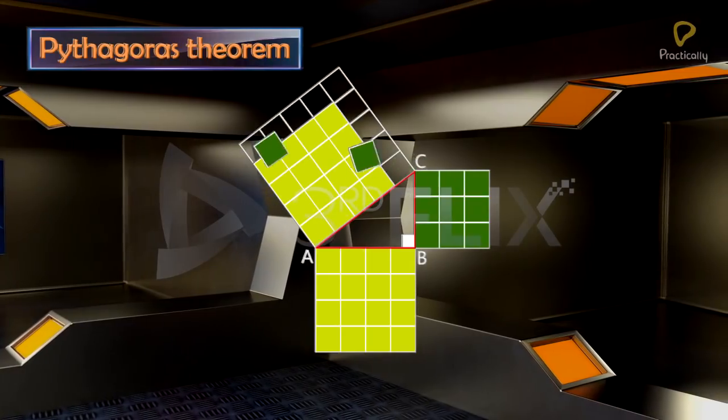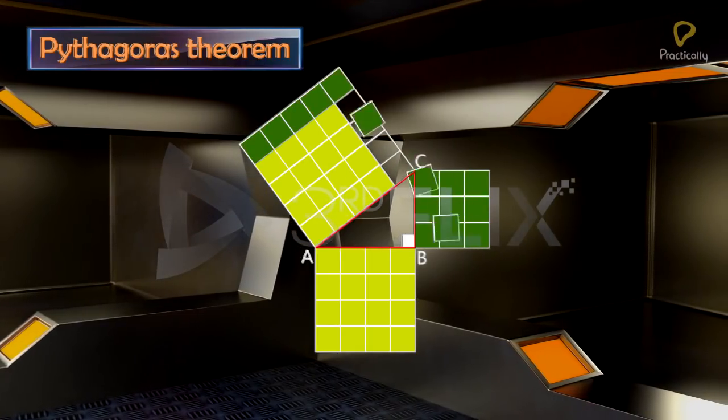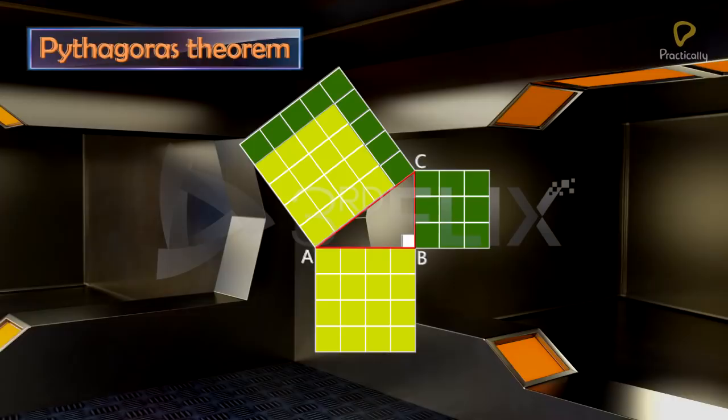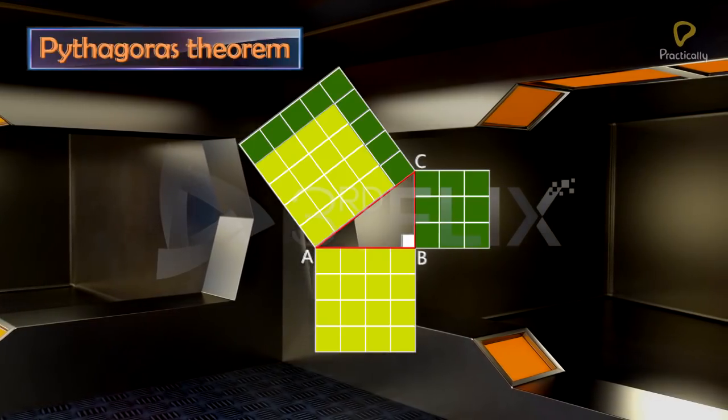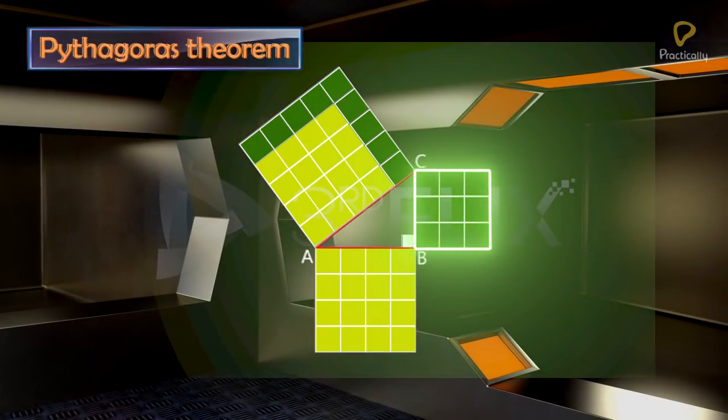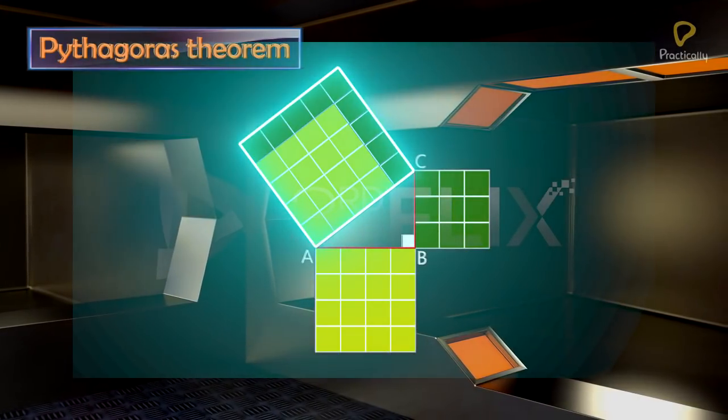Step 4: Place all the unit squares on the square on the hypotenuse. Step 5: What do you observe? We observe that the unit squares of the two squares on the legs completely cover the square on the hypotenuse.